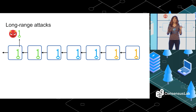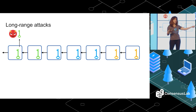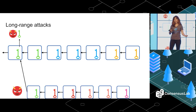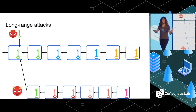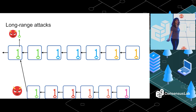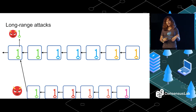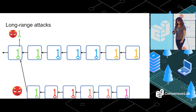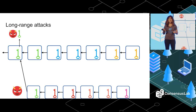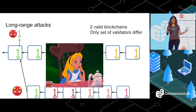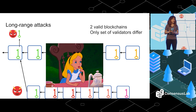With those keys, the adversary is able to rewrite an entire alternative chain. Maybe the adversary will simulate some change in the set of validators. The issue is that if a user — say Alice — has been asleep, wakes up, and sees these two chains, she has no way of knowing which is the correct chain and which is the adversarial chain. Because both chains are actually valid — both have valid signatures. Only the set of validators differs between the two chains, but Alice cannot tell which one is which.